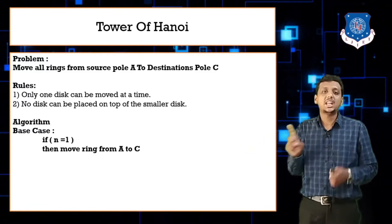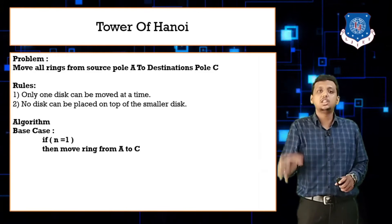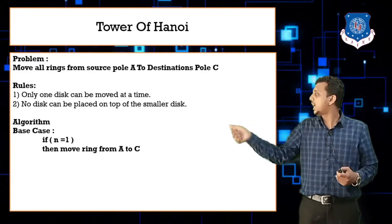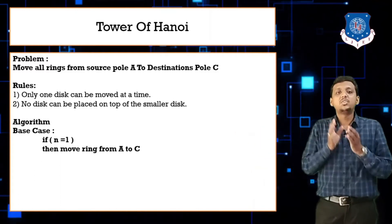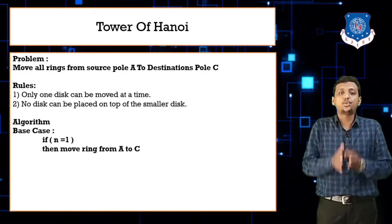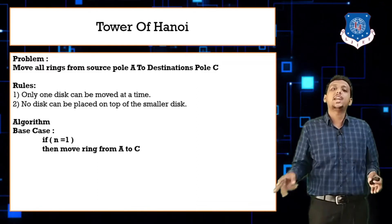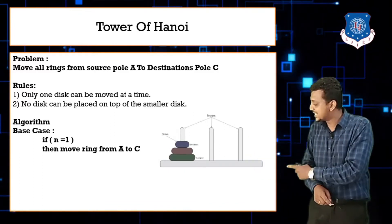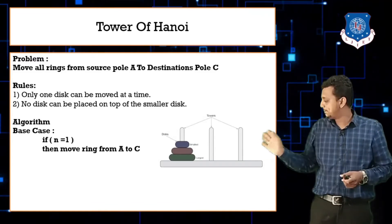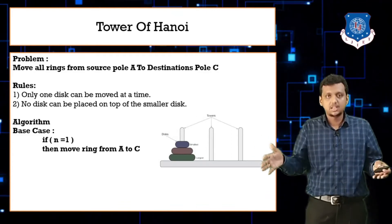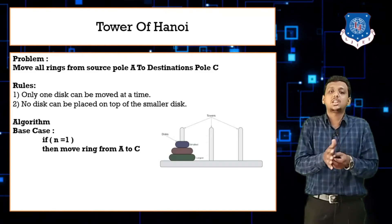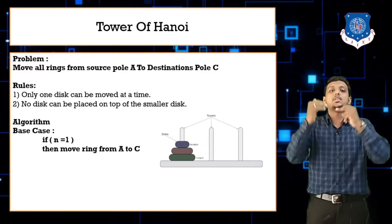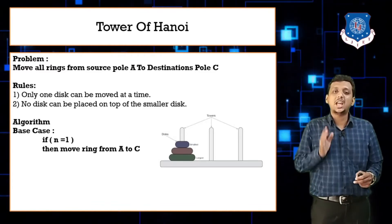The base case is when n equals one, where n represents the number of rings in the pole. If n equals one, you simply move your ring from source pole A to destination pole C. We have three poles: pole A, pole B, and pole C. In the figure, the larger disc is at the bottom, the middle disc above it, and the smallest disc on top.